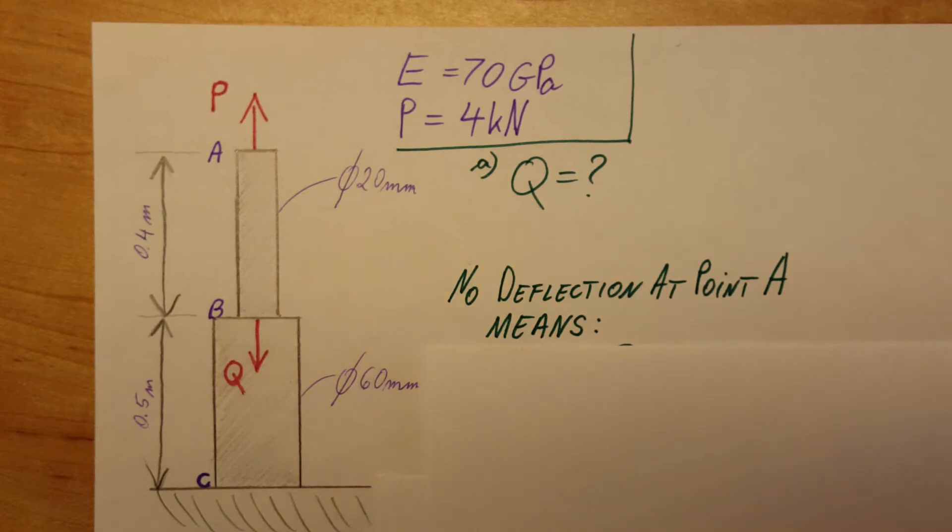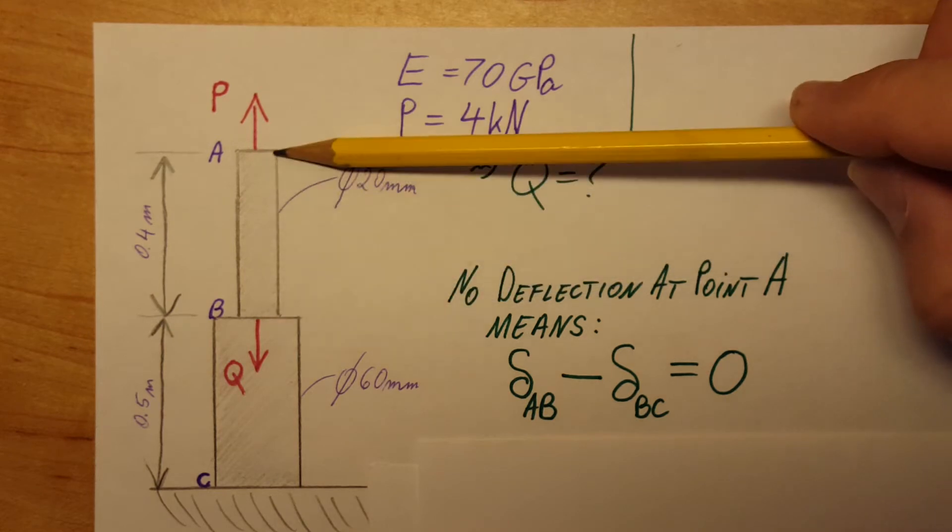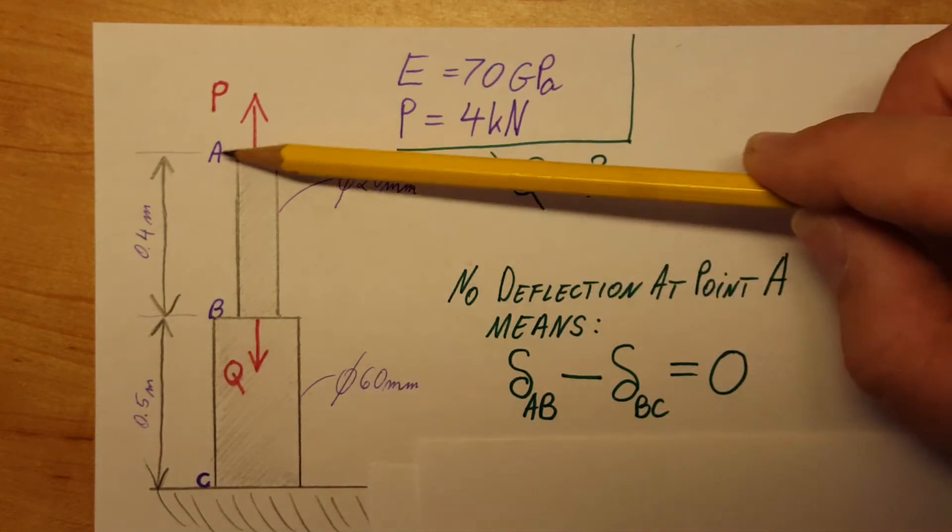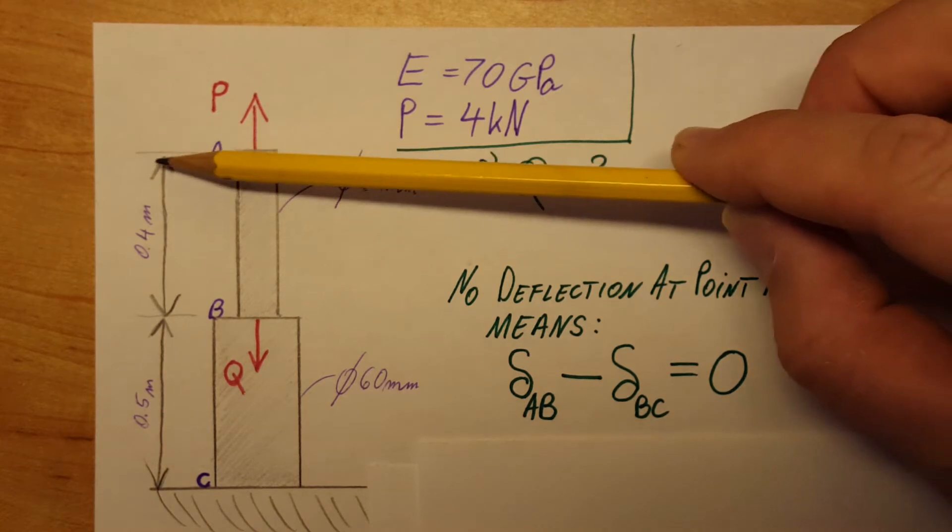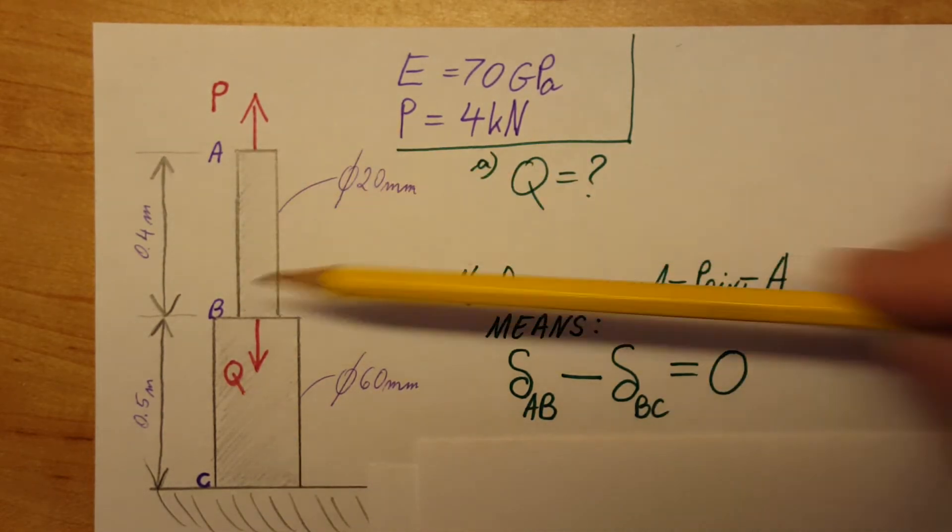For this, let's write up our starting equation, which will be: the deformation of part AB minus whatever deformation happens at BC. This will give us a total deformation of 0, since point A stays at 0.9 meters.